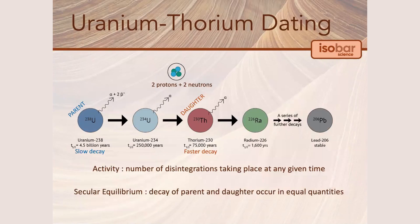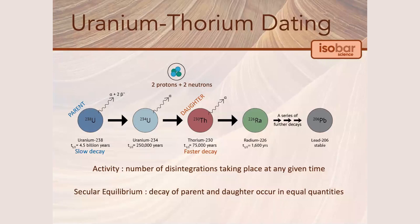Uranium-thorium dating differs from radiocarbon dating, as it does not measure the end of a decay product, or the abundance of remaining nuclei left over after radioactive decay. Uranium-thorium dating is based on the activity ratios of the parent — uranium — and the product thorium isotopes. This is done by calculating the disintegration of the parent, uranium, into the daughter over time, detected through mass spectrometry of both the parent, uranium-234, and the daughter, thorium-230, products of decay.